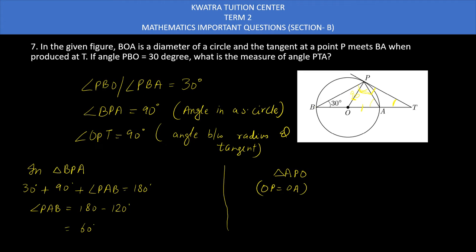So if this is 60, this will be 60 as well. Let me use another pen. This one will be 60 as well. If this is 60, this will be 60. So I can write that my angle OPA is equal to angle OAP. And OAP value is 60.